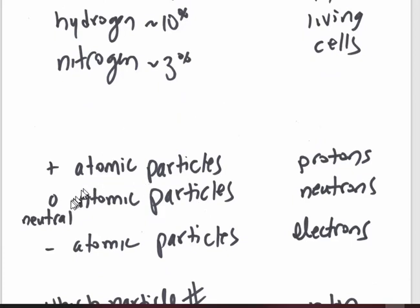Positive atomic particles and neutral atomic particles, what are these called? These are both in the nucleus of the atom. The negatively charged atomic particles that swarm around the outside that participate in chemical reactions are called this.